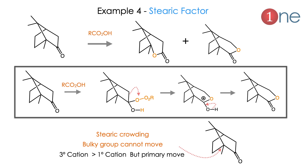The next example demonstrates steric effects in a bicyclic ketone. Oxygen can form near or away from the bridge. Even though the tertiary cation near the bridge seems favorable, the bridge is crowded by methyl groups and rigid carbons — it is very crowded. Even though it is a tertiary cation, the whole group cannot migrate. So the primary cation migrates instead, and the ester forms away from the bridge. Steric crowding overrides migratory aptitude here.